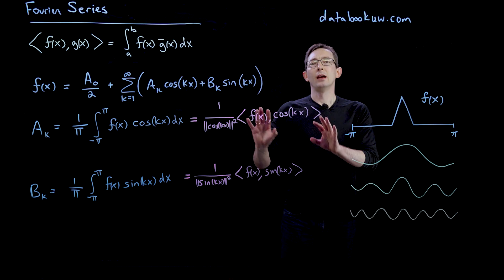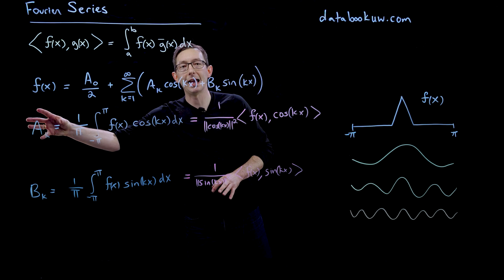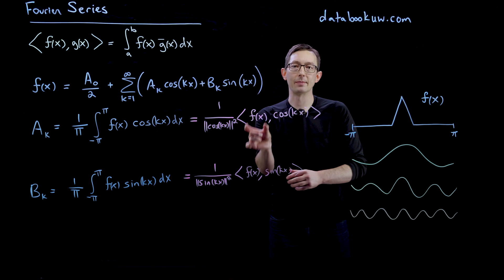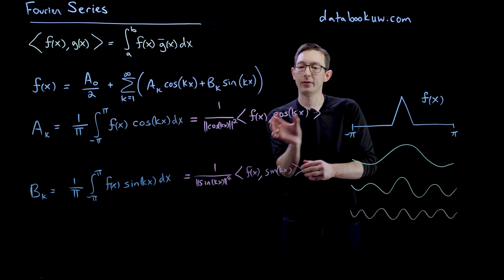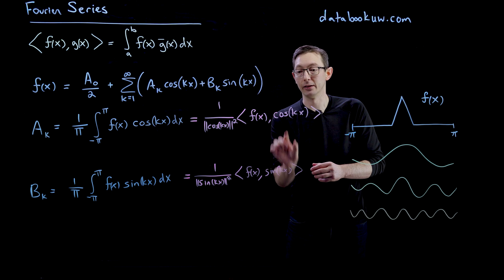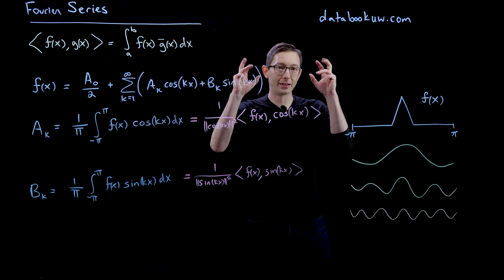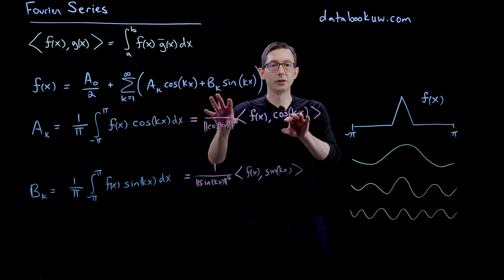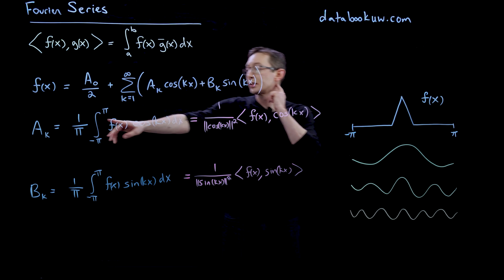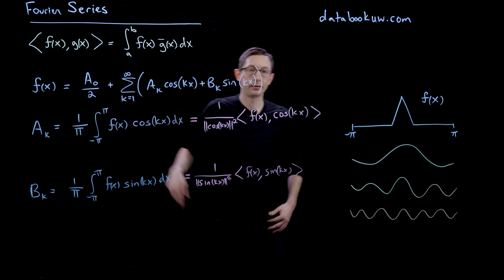So what we've done here is written these coefficients a and b in terms of inner products of my function f with that particular frequency cosine and sine wave, normalizing by the norms of those functions squared, which happen to be 1 over pi in this case.